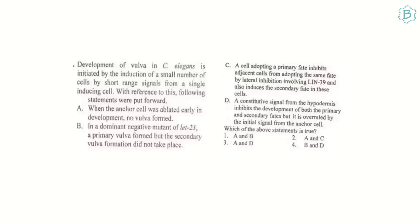Statement D: a constitutive signal from the hypodermis inhibits development of both primary and secondary fates, but is overruled by the initial signal from the anchor cell — this is correct. Both A and D are correct, so the answer is the option showing A and D together, which is the third option. The key exam strategy: if you know what is correct or what is wrong, you can reach the answer either way.